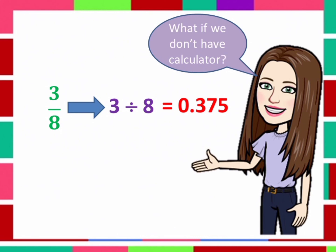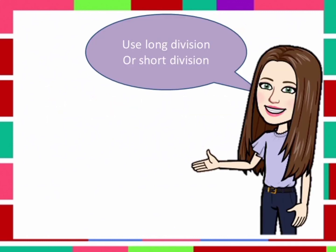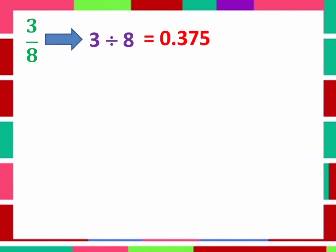What if we don't have calculators, or maybe you are not allowed to use a calculator? You can use the long division or short division. So let's try it — 3 over 8, or 3 divided by 8. We cannot divide 3 by 8, so write 0 here. Add a decimal point to the answer and also to the given inside the division bracket. Now, add 0 so it will become 30.